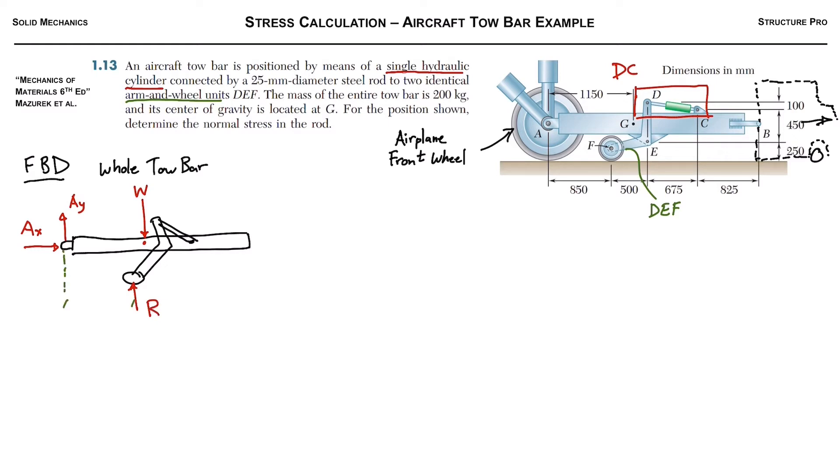So the weight is 200 kilograms, and then at the bottom we have this reaction from the ground. So the reaction is 850 millimeters away from this point, the airplane front wheel.